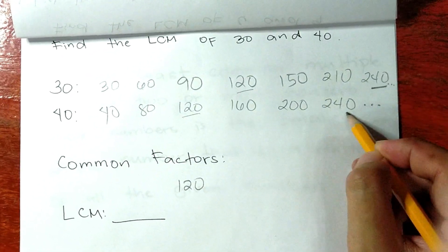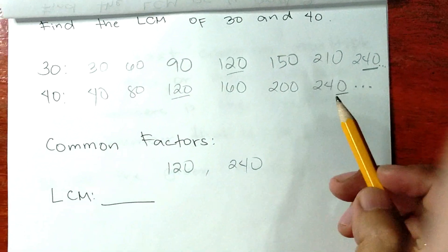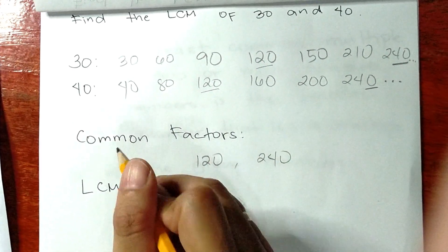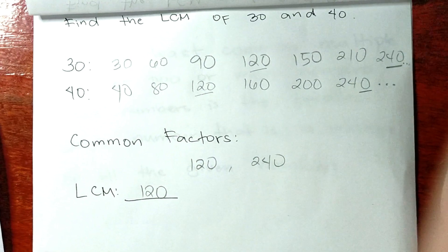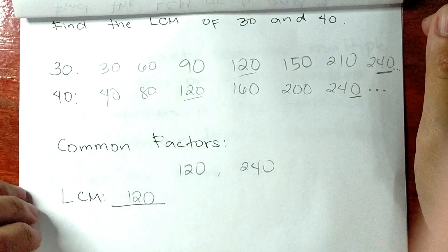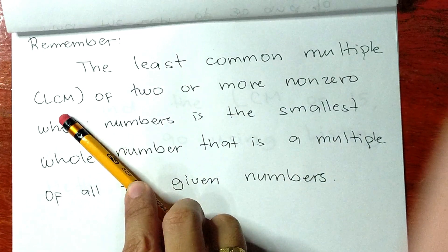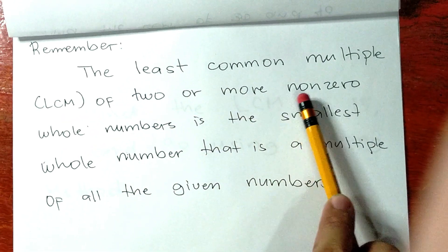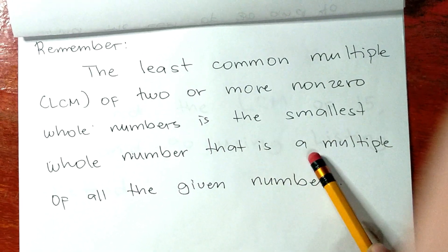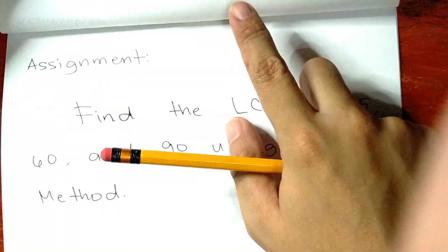So what is our least common multiple? Our least common multiple or LCM is 120. If your answer is 120 you're correct. Remember, the least common multiple or LCM of two or more non-zero whole numbers is the smallest whole number that is a multiple of all the given numbers.